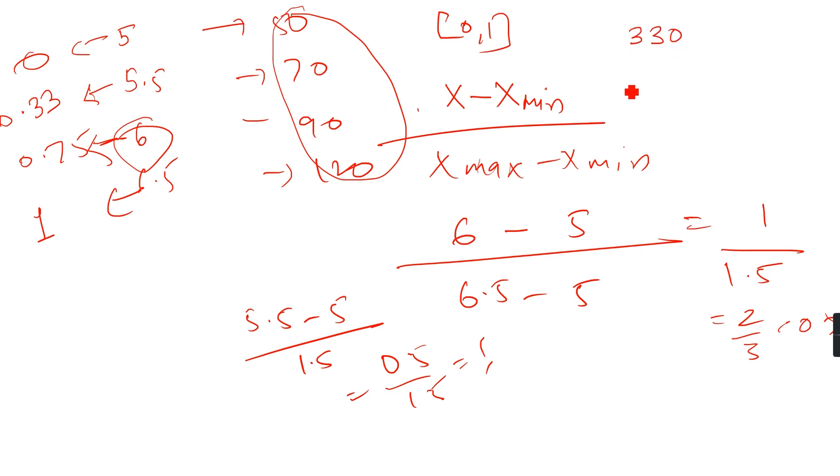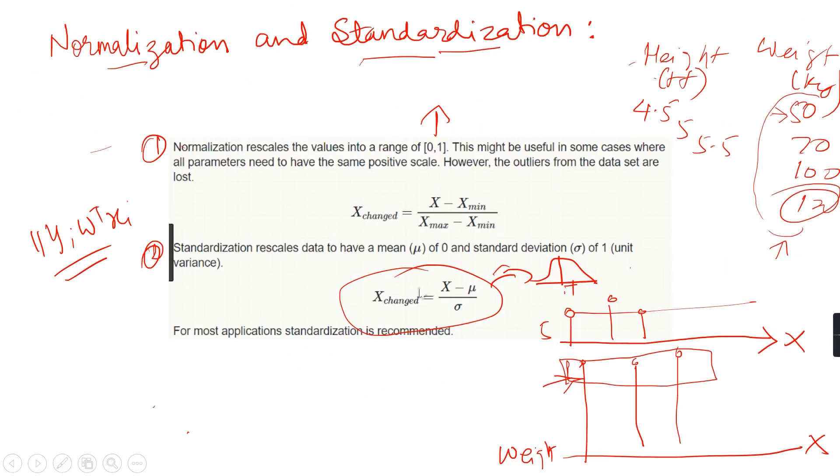That's 330 divided by 4, which is 82.5. That will be the mean. We can find the standard deviation by the formula and similarly we can normalize it. We find the mean, find the standard deviation, and then plug in the value of x.